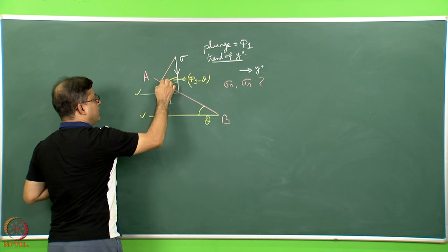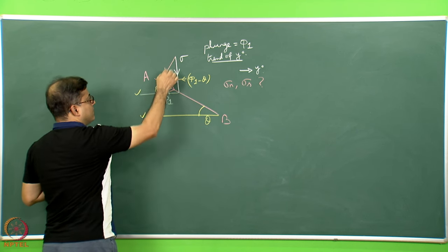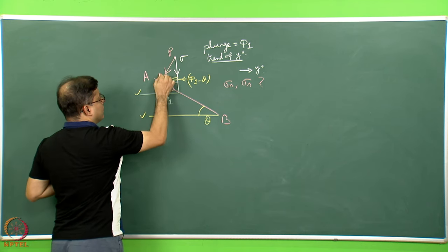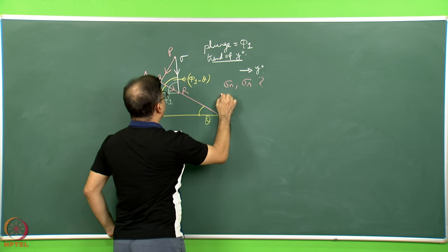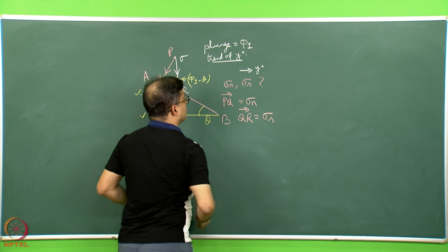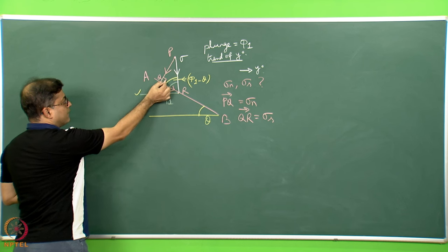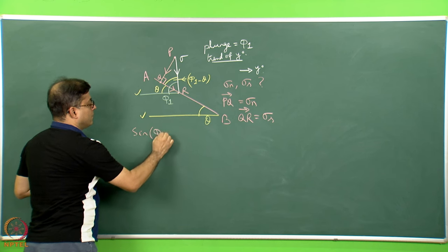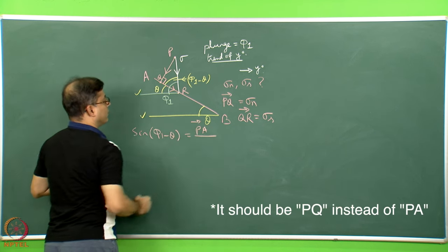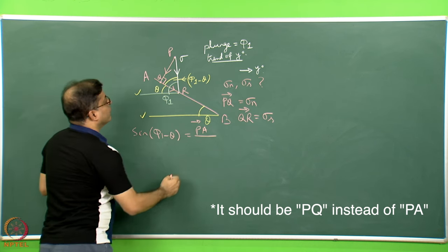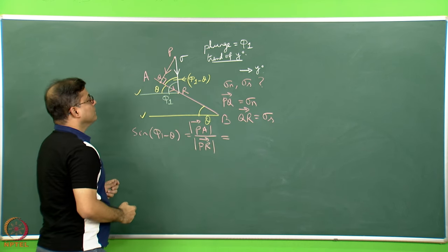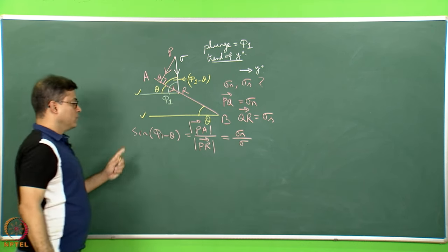I drop a normal from this point onto plane AB. The component along the normal is the normal stress and the component along the plane is the shear stress — these are the components of sigma. Let us say this point is P, this point is Q, and this point is R. So I can say PQ is the normal stress and QR is the shear stress. In triangle PQR, this angle is 90°; therefore sin(phi_1 − theta) is the relevant ratio.